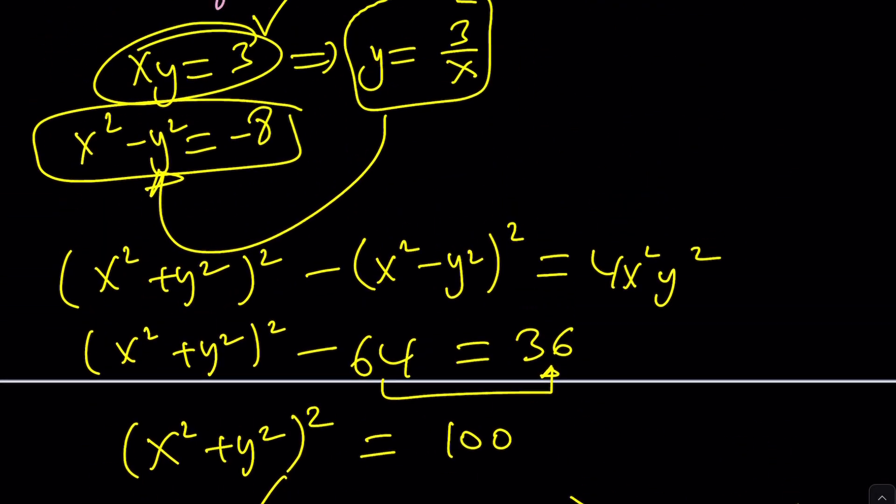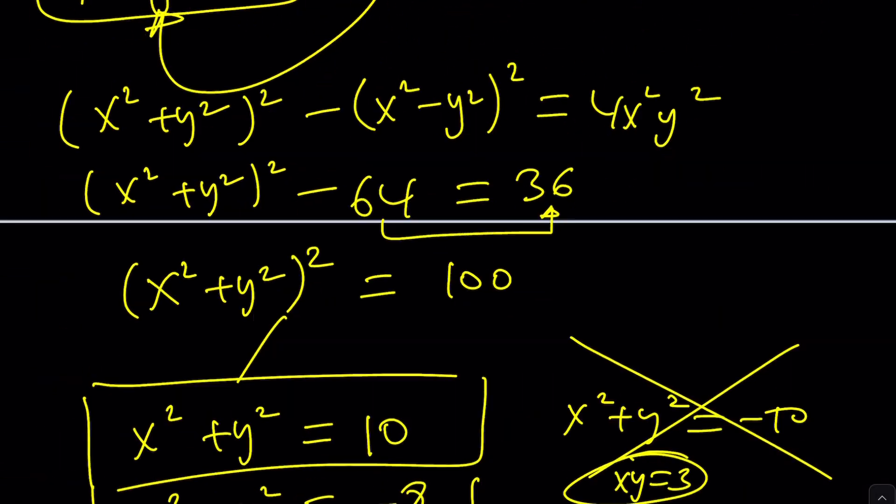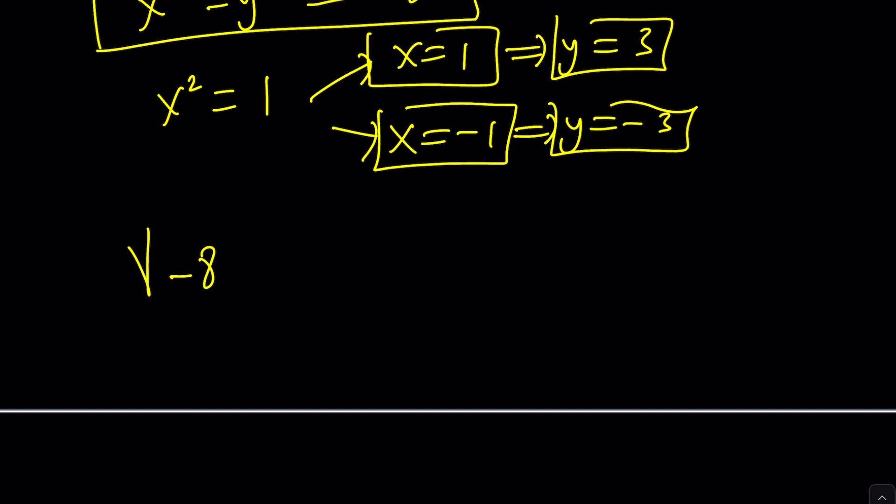In other words, the square root of, what was I square rooting? I forgot. Negative eight plus six i. And that is one plus three i or negative one minus three i.